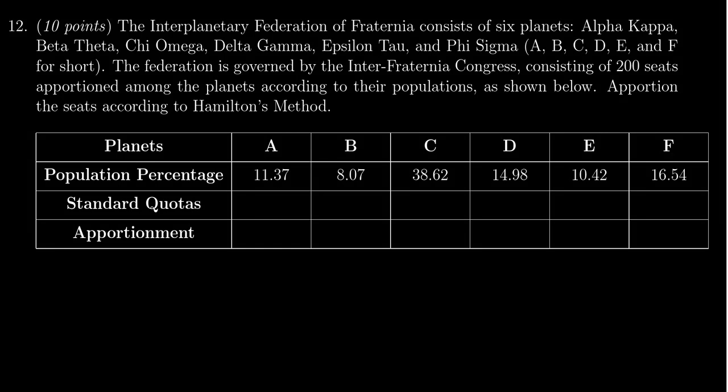In this video we provide the solution to question number 12 for practice exam number three for Math 1030, in which case we have an apportionment problem where we have six states for which we need to apportion 200 seats amongst those six states, and we're going to do that using Hamilton's method.